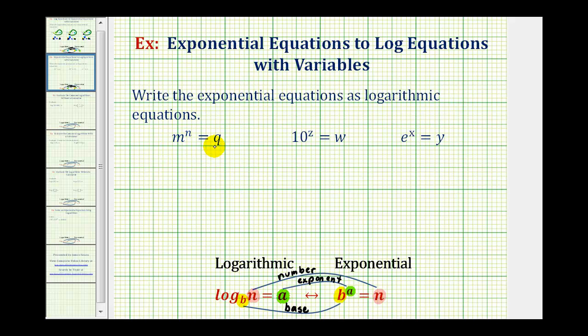Looking at our first exponential equation, we have M raised to the power of N equals Q. So the base is M, our exponent is N, and the number is Q. So we know we'll have a logarithm. It's going to be equal to something. Well, our base is M, so that goes here. A logarithm is an exponent. The exponent is N, so the log must equal N, and is equal to Q, so our number is Q.